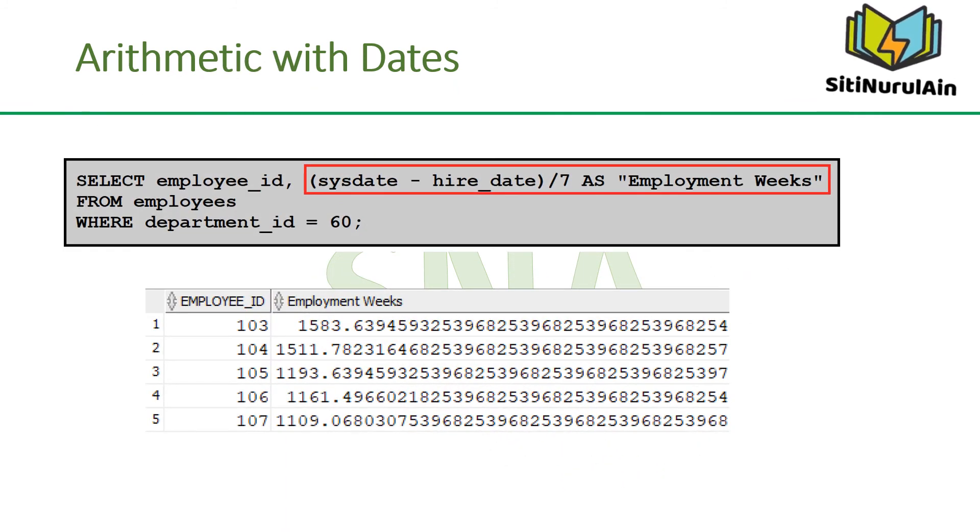The example in the slide displays the last name and the number of weeks employed for all employees in Department 60. It subtracts the date on which the employee was hired from the current date, SYSDATE, and divides the result by 7 to calculate the number of weeks that a worker has been employed.